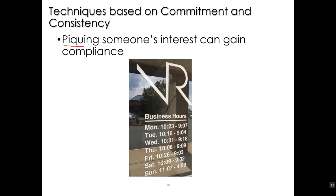Also, peaking — getting somebody's interest peaked — is one way to gain compliance. For example: 'Isn't this interesting? Why in the heck do they have such weird hours?' This is consistency-based because now you're asking yourself why, and you're going to want to interact with them to find out. That's how peaking can draw you into a situation where you say yes to coming in or getting more information. So peaking is another consistency-based technique.